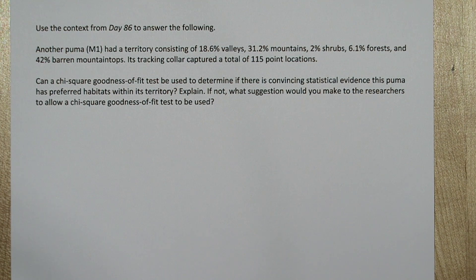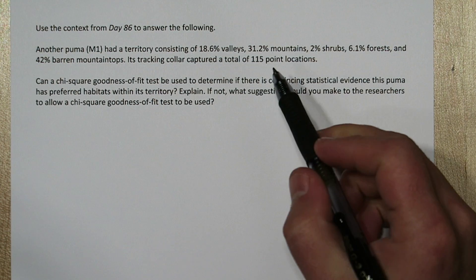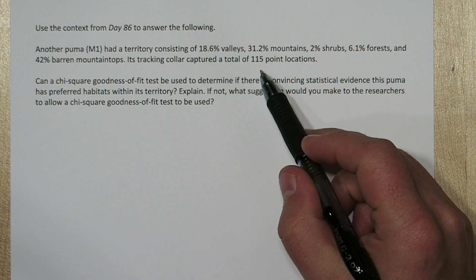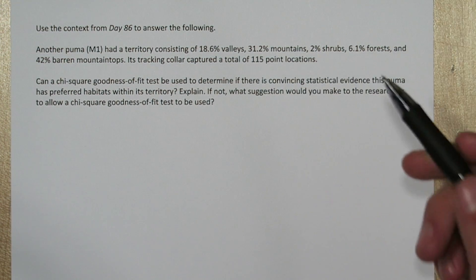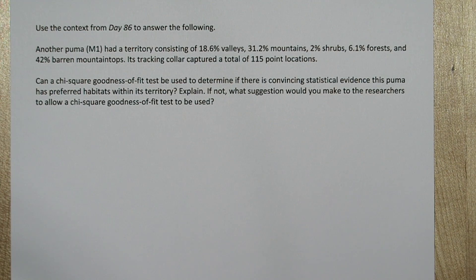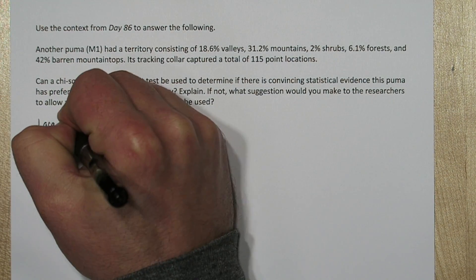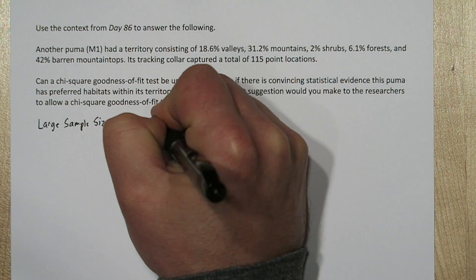So we need to check conditions here and see if we can use a chi-square test. The first thing I notice is 115 is a lot smaller than our previous sample of 540. So I'm a little worried about the large sample size condition. So let's check that.